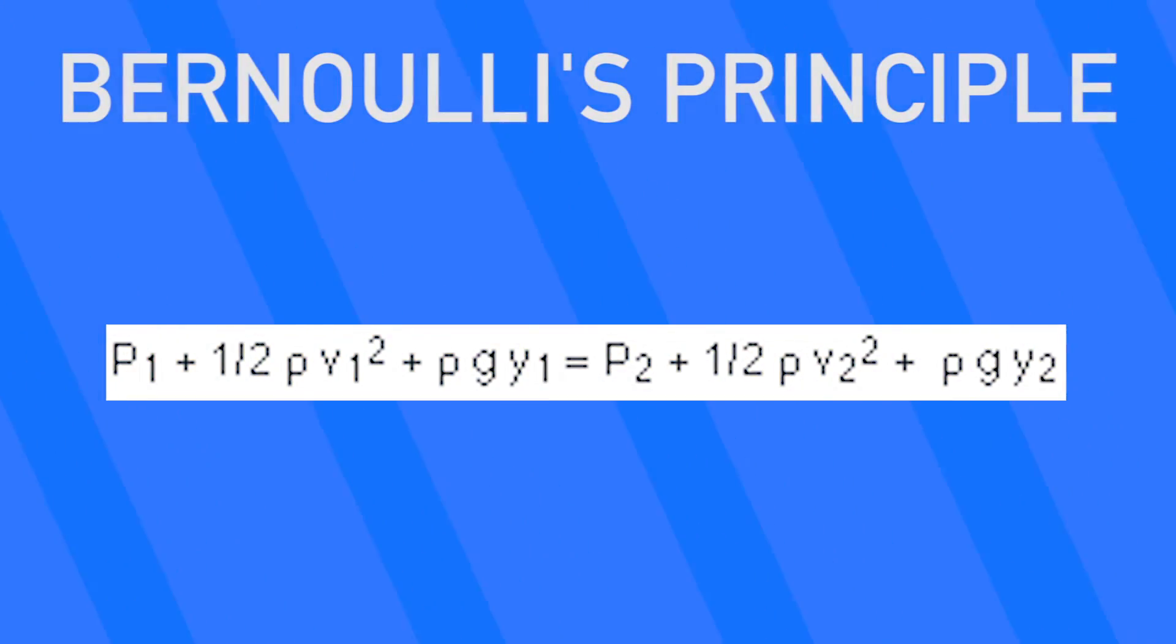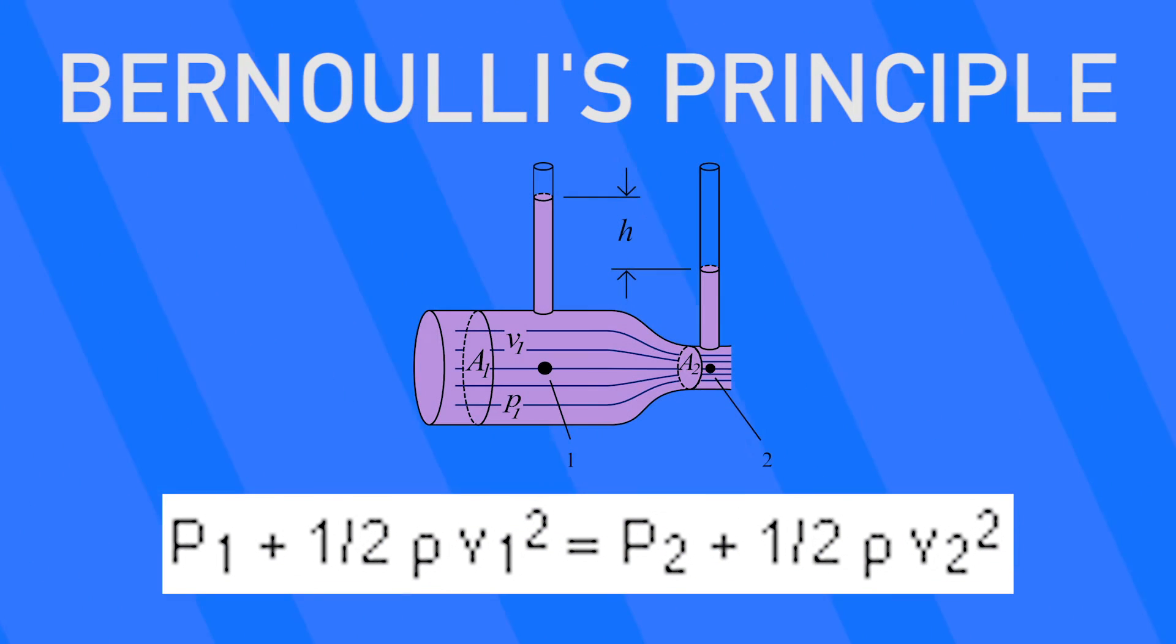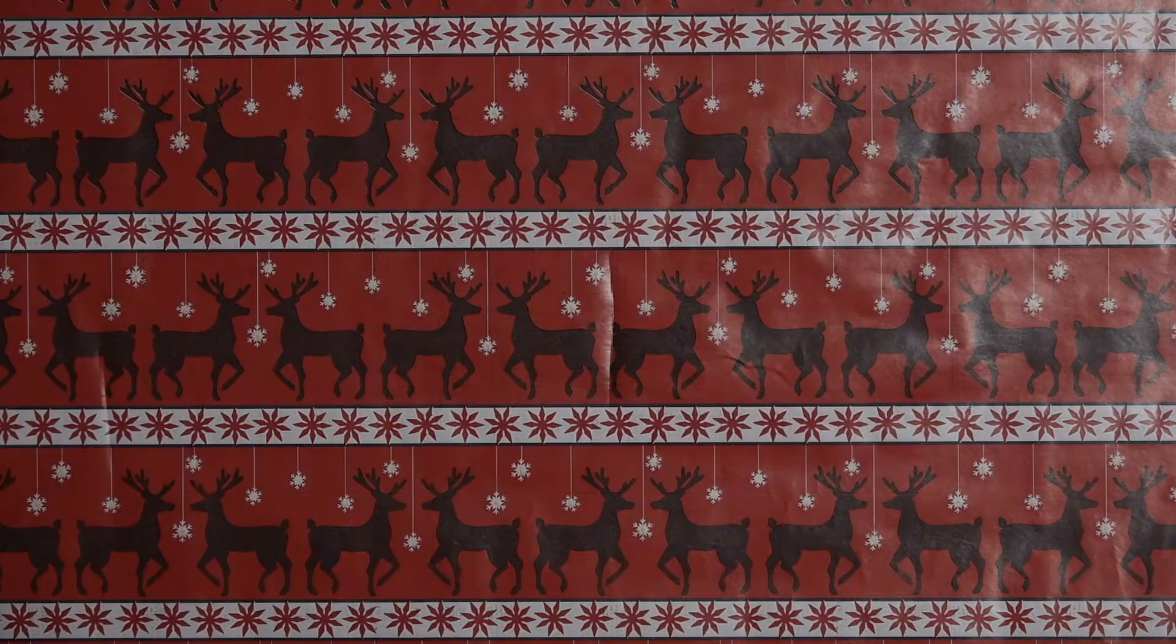We can simplify Bernoulli's equation in a flat pipe. And since height doesn't change, it looks like this. A little bit easier to understand. Since the smaller pipe on the right has a larger velocity, the pressure on the right has to be lower to get the equation to balance. It's this difference in pressure that actually causes the fluid to flow faster.